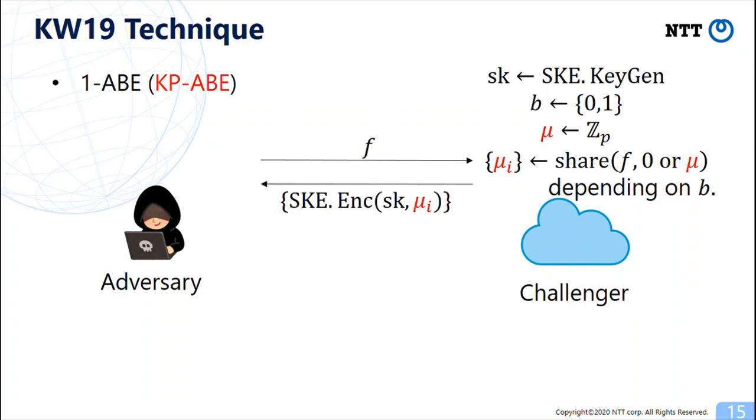The other is a query on an attribute set S and the adversary can obtain secret shares corresponding to attributes in S. Of course, there is a condition such that the adversary cannot obtain secret shares that can recover mu.